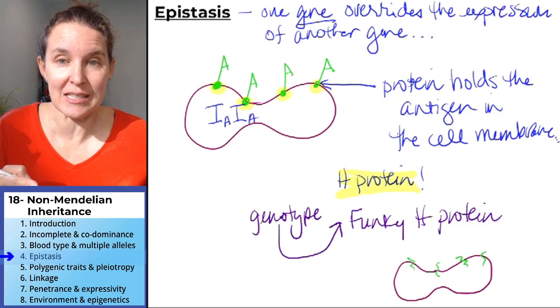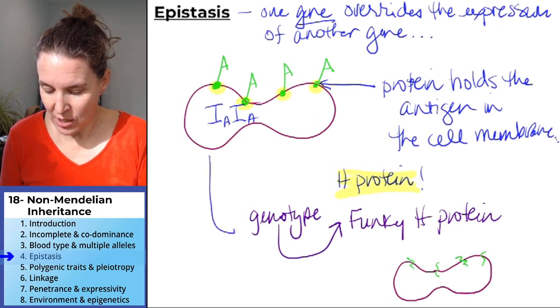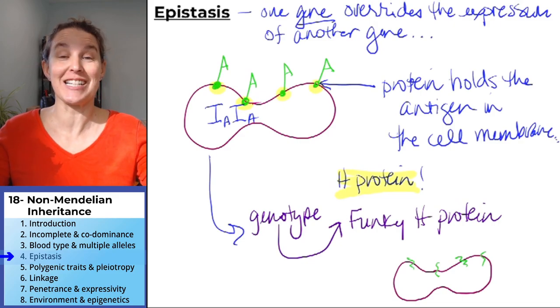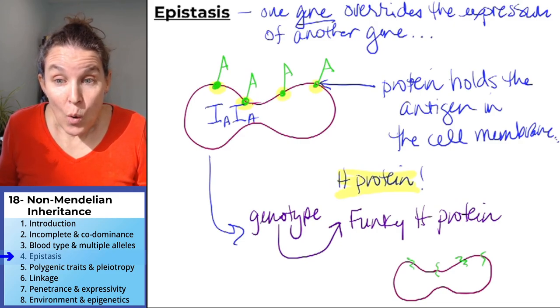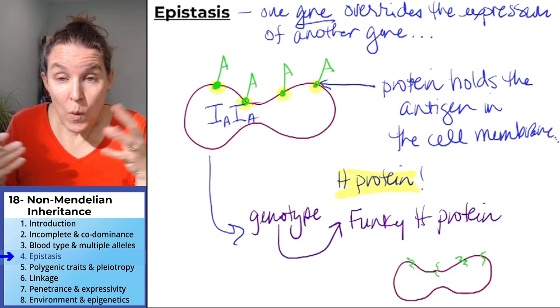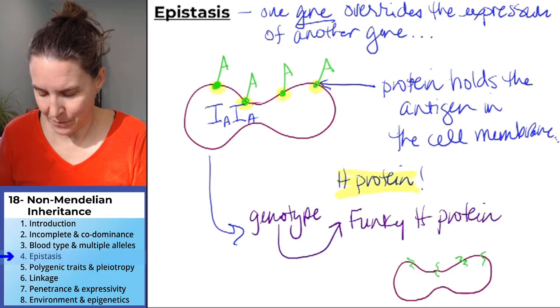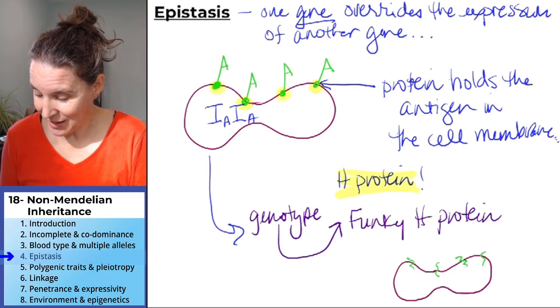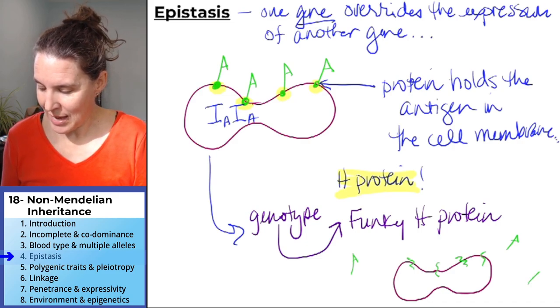Let's just say they have a IAIA genotype. So they have the genes to make type A blood. But if they have the genotype that causes funky H, then they have no way to embed those antigens in the red blood cell. I like to think of them, those antigens now are just floating out there like they can't attach.